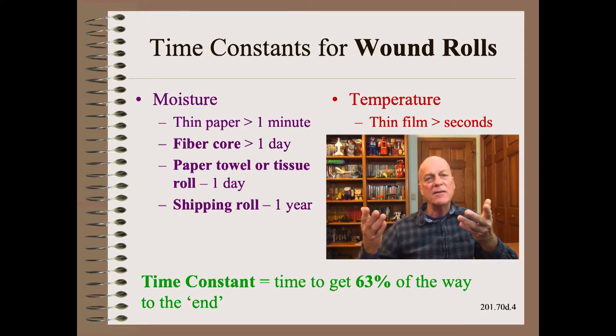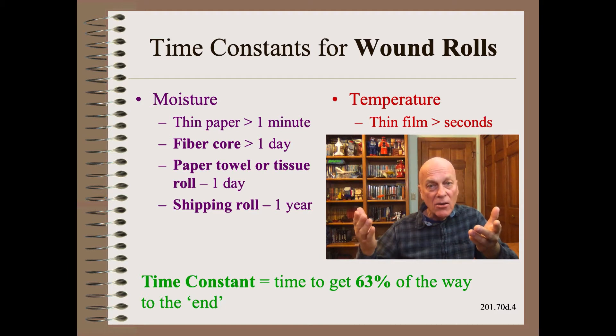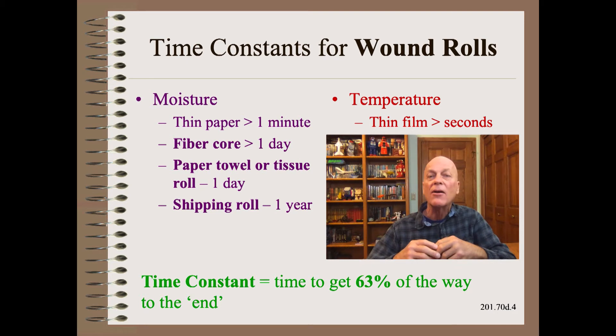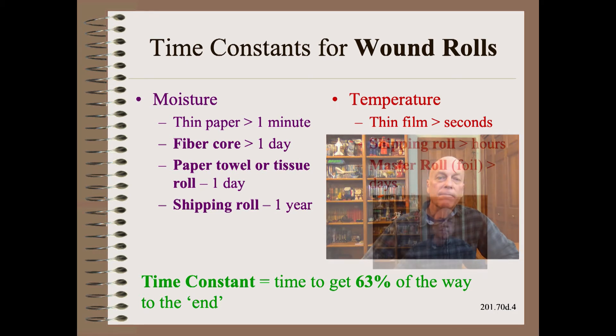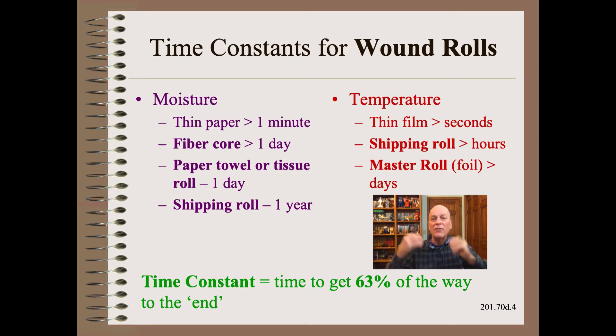That makes sense if you think about it, how long it takes a tree trunk to dry out when it is cut, because it is also made of cellulose and also has a roughly similar density and area of paper rolls. Again, temperature is much faster. Hot shipping rolls tend to cool within a number of hours, again, depending mostly on how big the roll is.